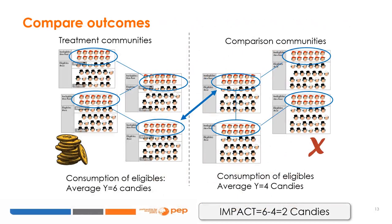What is the direct treatment effect of the program? The program evaluation compares the consumption of eligible individuals in treatment versus comparison communities. In a simple example, the average consumption was 6 for eligible individuals in treatment communities and 4 for eligible individuals in comparison communities. Thus, the program's treatment effect was simply 6 minus 4, which equals 2.